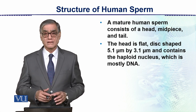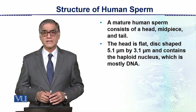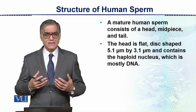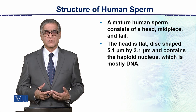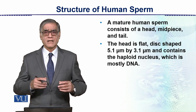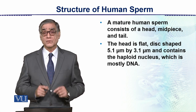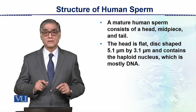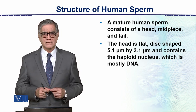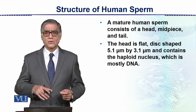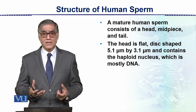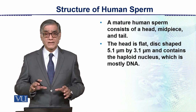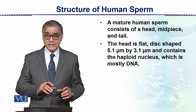The tail contains the haploid nucleus. The head is the haploid nucleus. As we call it haploid, it means it has 23 chromosomes — 22 autosomes and then there is either an X or Y chromosome, making it an X-bearing or Y-bearing sperm.